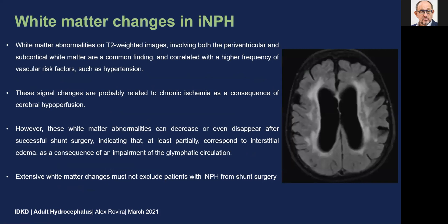White matter abnormalities on T2-weighted images involving both the periventricular and subcortical white matter are a common finding in patients with normal pressure hydrocephalus, correlated with a higher frequency of vascular risk factors such as hypertension. These signal changes are probably related to chronic ischemia as a consequence of cerebral hypoperfusion. However, these white matter abnormalities can decrease or even disappear after successful shunt surgery, indicating that they at least partially correspond to interstitial edema as a consequence of impairment of the glymphatic circulation. Therefore, extensive white matter changes must not exclude patients with normal pressure hydrocephalus from shunt surgery.